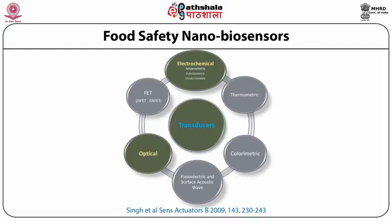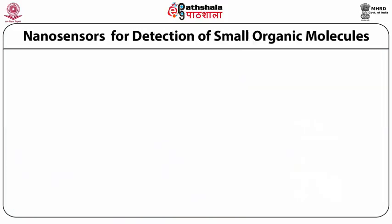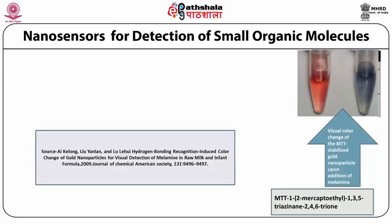In this example we are looking at a milk urea biosensor. Urea is one of the fraudulent adulterants added to milk; therefore its detection is important. Looking at the second column of the table, 23 minutes is the response time received by microbial-based biosensing versus 8 minutes received by enzyme-based biosensors, depicting that in this case the enzyme-based biosensor was a better model. Looking at the last column, an enzyme-based biosensor impregnated with nanoparticles brought the time of detection down significantly to 20 seconds.